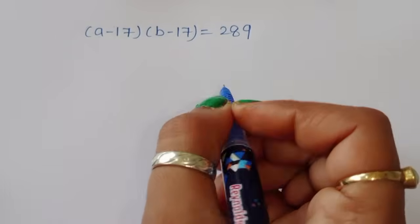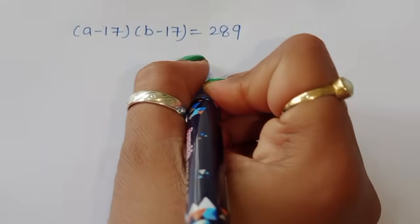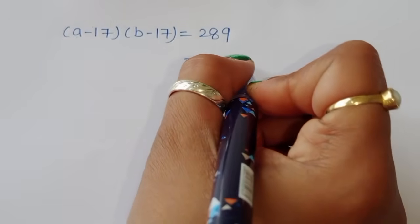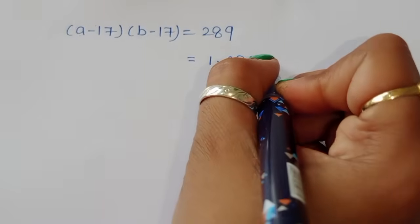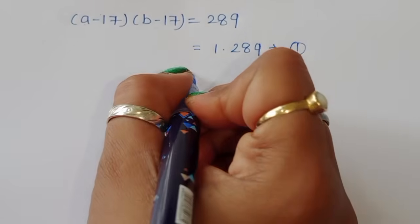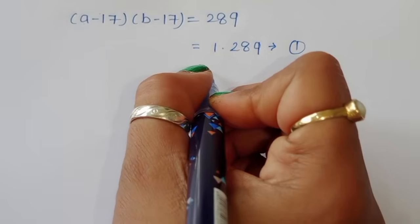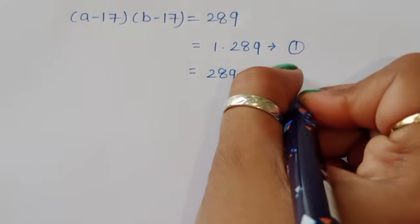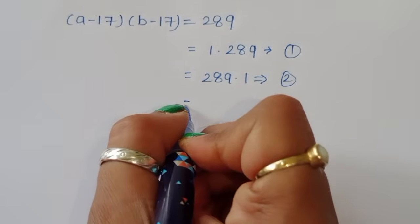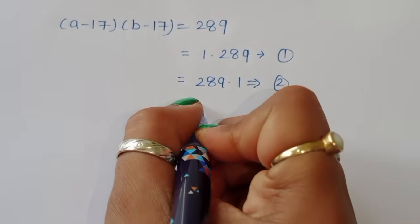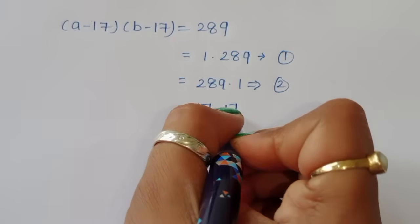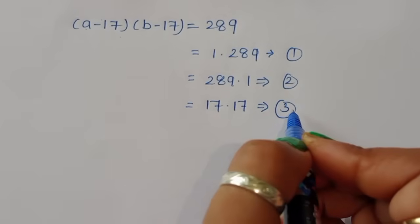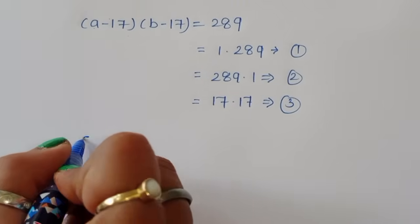Now we need to find the factors of 289. The factor pairs are: Case 1: 1 × 289 = 289; Case 2: 289 × 1 = 289; Case 3: 17 × 17 = 289. So we have three cases to consider.